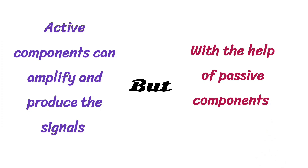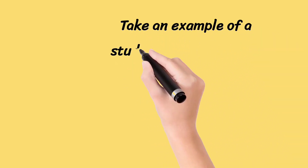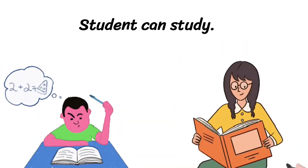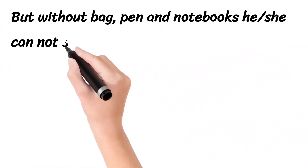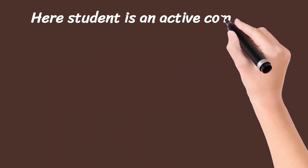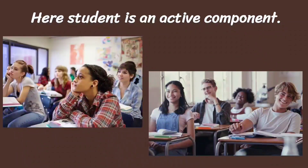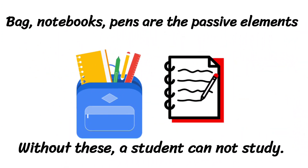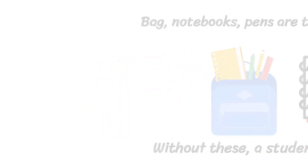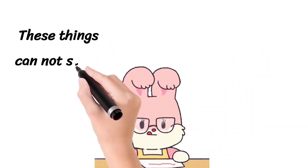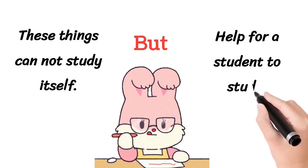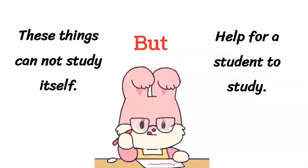Let us understand with the example of students and school bags. A student can study — the student is an active component, as he can work by himself. Bag, notebook, and pen are all passive elements. Without these, the student cannot study. These things — bag, notebook, pen — cannot study on their own, but they can help the student study.